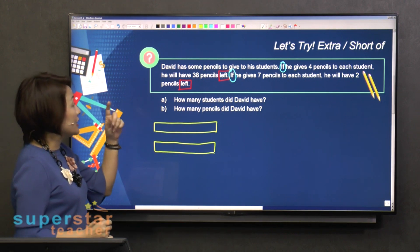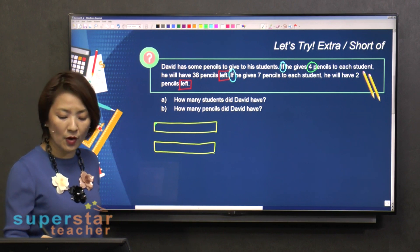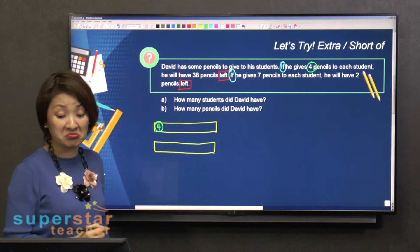First scenario, if he gives four pencils to each student, four pencils to each student, four to each student, how many students did he have?